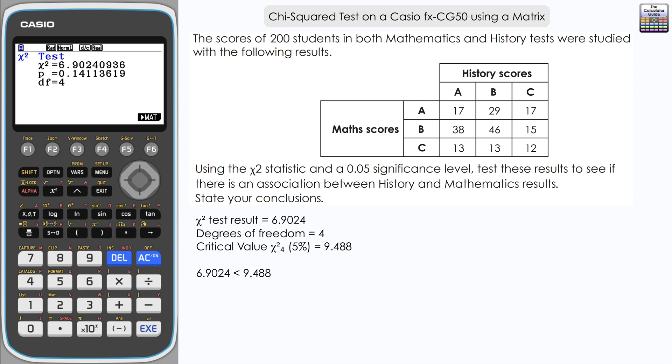Our result from the chi-squared test is 6.902, which is less than 9.488. With it being less than the critical value, we say there is insufficient evidence to reject H₀ at the five percent level. This suggests that maths and history results are in fact independent. That would be our conclusion.